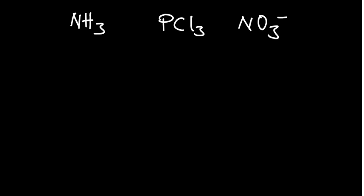Look at the examples that we have. We've got NH3, PCl3, and O3. In only two steps we are going to determine the Lewis structure.